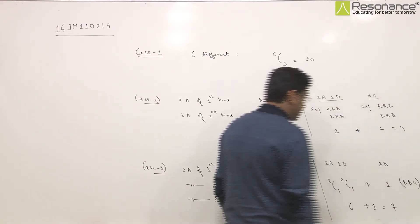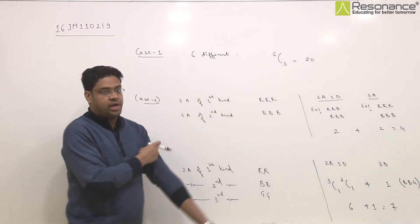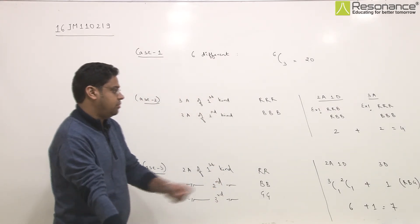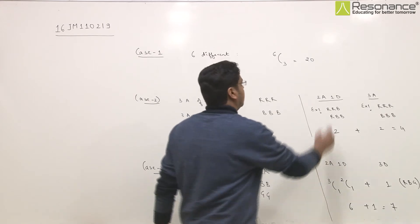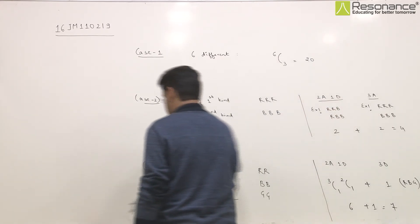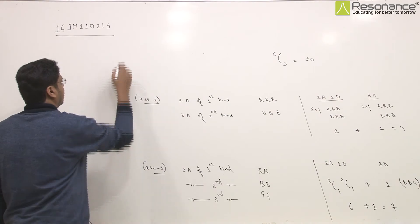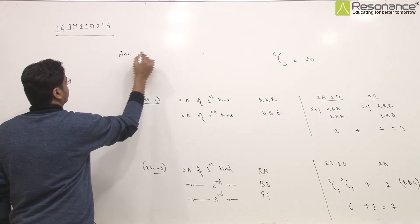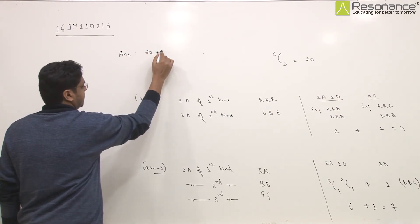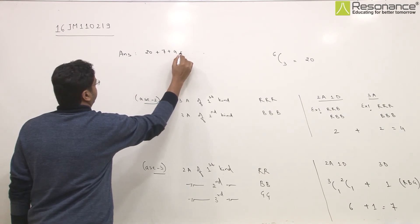Total will be 7 ways. So the final answer is 20 plus 4 plus 7. The answer is case 1 plus case 2 plus case 3, which equals 31.